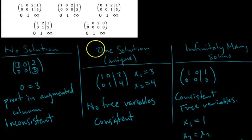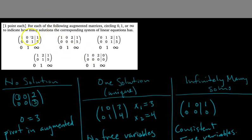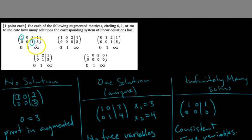Now that we know all this, let's solve the problem. The first matrix has pivots here and here. Since there's no pivot in the augmented column, the system is consistent. Then we check for free variables: the x2 column doesn't have a pivot, so x2 is a free variable. That means we can write the solution in parametric vector form, telling us there are infinitely many solutions.